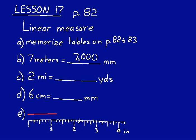And then the next one, 2 miles equals how many yards? Well, you know that there's 1760 yards in one mile. So in 2 miles, you just multiply 1,760 by 2, and that equals 3,520 yards.